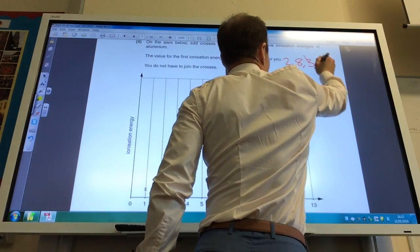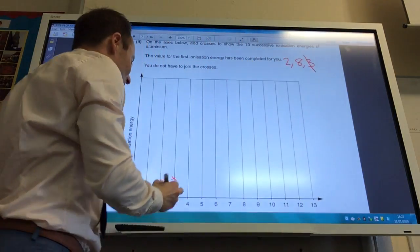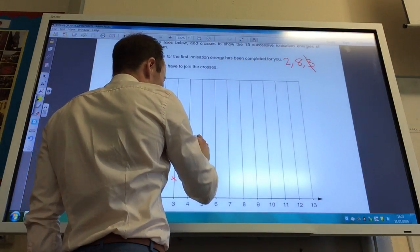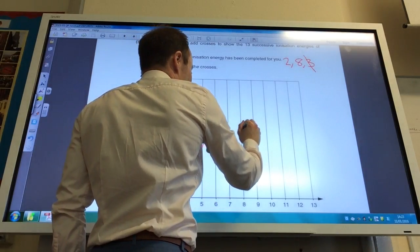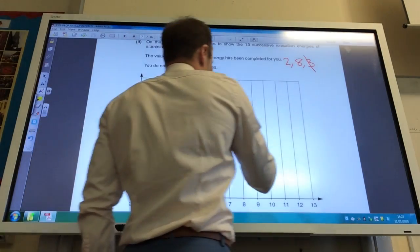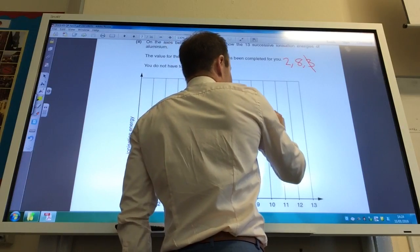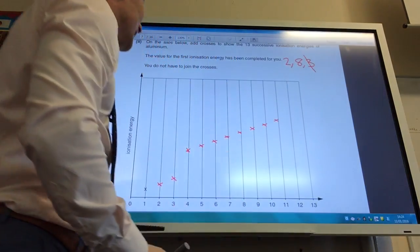Then there's going to be a change, so I've got rid of those. I'm now onto that shell, so there's a jump. The next 8 all go up progressively but no big jump. 1, 2, 3, 4, 5, 6, 7, 8. So those are those 8, they're done.